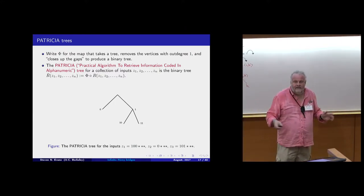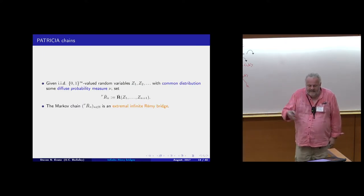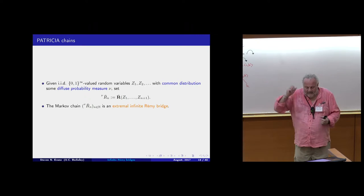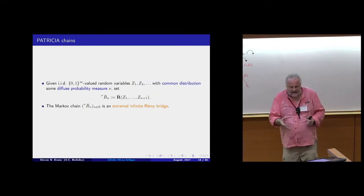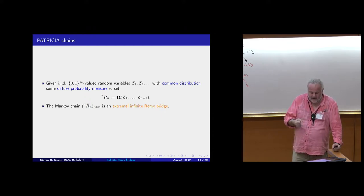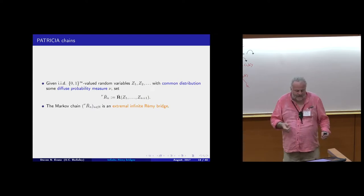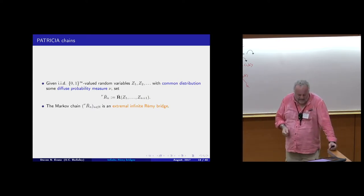Here's the Patricia map for the same sequence of infinite binary words from the previous slide. Now, what happens if we take our input random variables to be IID infinite strings with some diffuse probability measure μ on {0,1}^∞ — diffuse because we're not allowed to see the same infinite word twice — and let R-bar_n be the Patricia tree built from the first n+1 input words?